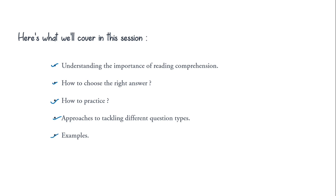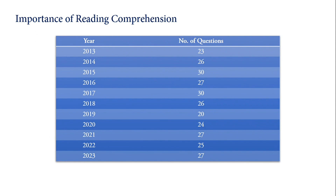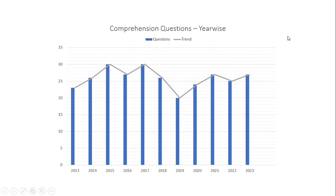Let's look at the importance of reading comprehension. In this table you can see the number of questions asked by UPSC from 2013 to 2023. For better understanding I have given the graph here. In 2013 they asked 23 questions, and then the graph goes 26, 30, 27, 30, 26.